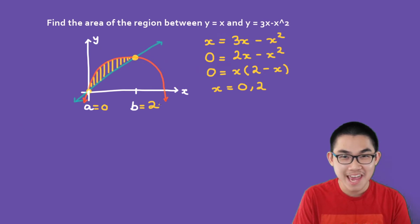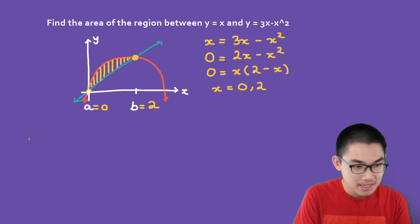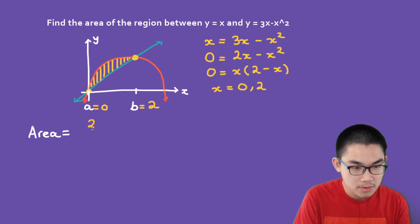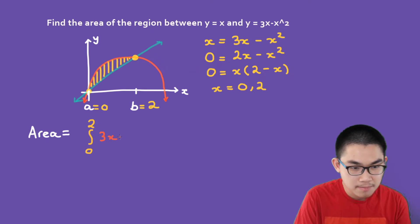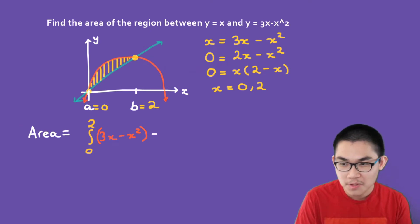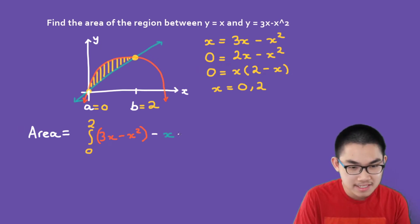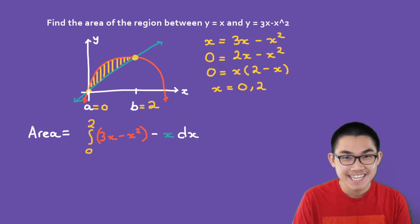Now remember our area formula — we are going to integrate with respect to x. The area equals the integral from 0 to 2. The upper function is the orange one: 3x minus x squared. We minus the lower function, which is simply x. Don't forget to put in the dx. This integral will give you the area.